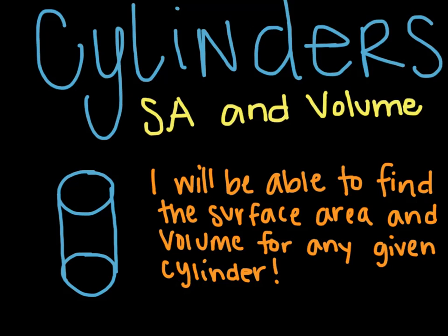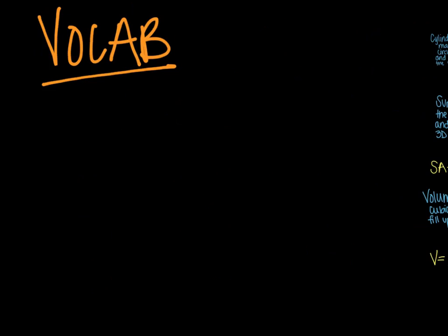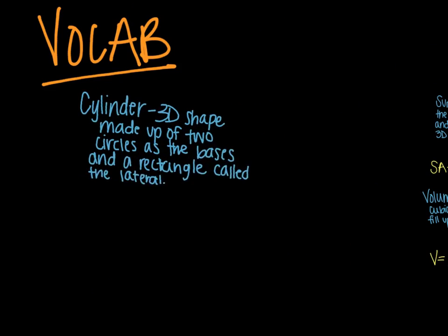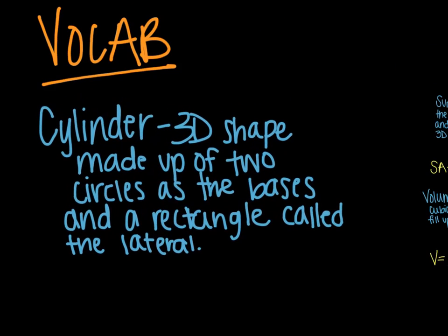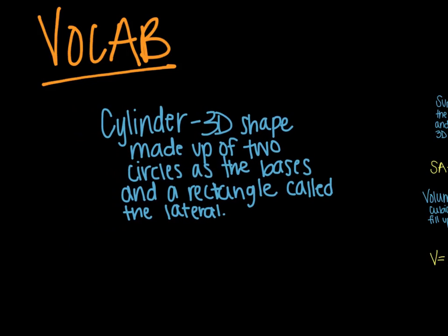Hello, welcome to your video on cylinders. We will be talking about surface area and volume. By the end, you will be able to find surface area and volume for any cylinder. Before we can do that, we need to know what we're talking about. A cylinder is a three-dimensional shape made up of two circles as the bases and a rectangle, which is called the lateral. I will show you a picture of that in just a minute.